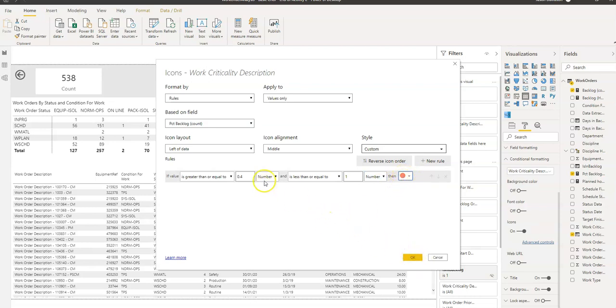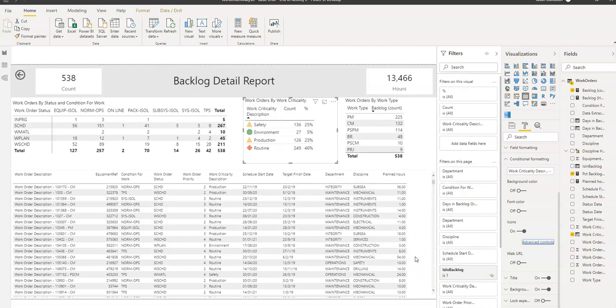If we want to allocate it based on the percentage of the total backlog, not the percentage of the span of data, we've got to use these numbers here. And we can see that that has allocated a red dot to this value here because it's above 40% in terms of the total backlog.